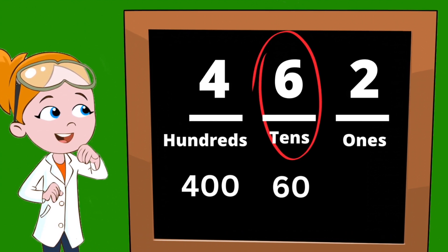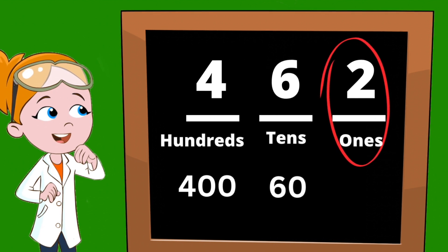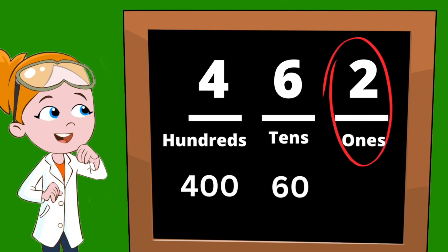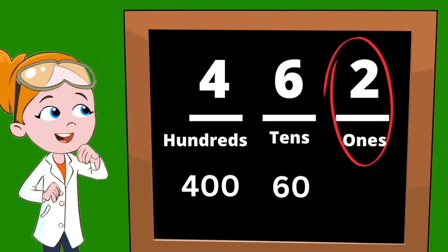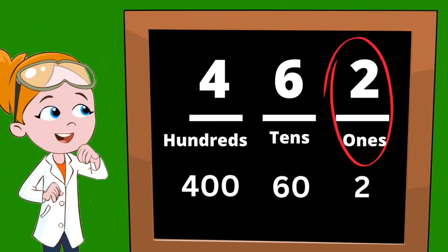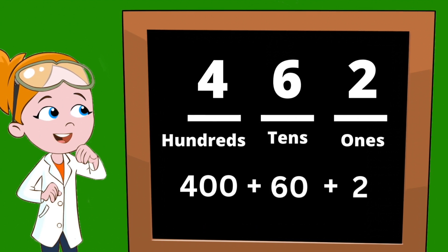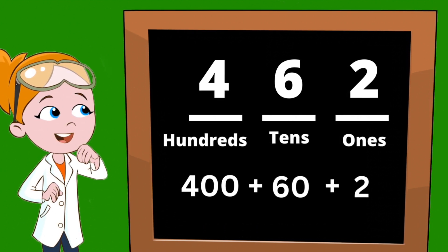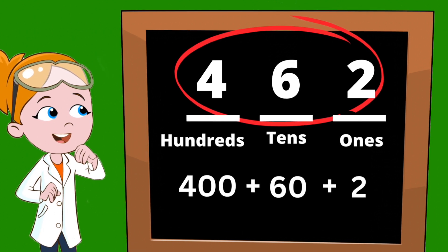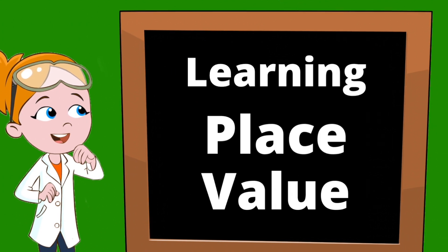Now if we move over to our ones category, how many ones do we have? We have two ones, so our ones category has a value of two. If we add those all together — four hundred plus sixty plus two — we get our total, which is four hundred and sixty-two. Wow, that was really awesome — great job learning place value!